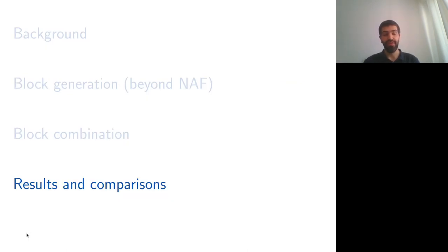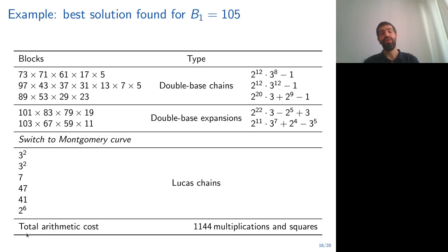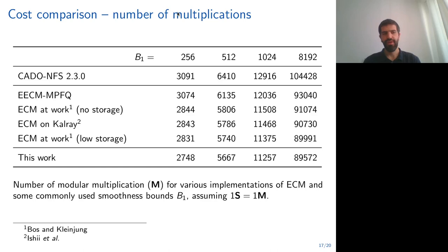Now, let's look at results that we obtained with this algorithm. First, let's look at the best solution that we found for B1 equals 105, which is the smallest B1 value used by CADO-NFS during the cofactorization step. Here we can see that with this solution, we use both the twisted Edwards curves and the Montgomery curves. We use double base chains and double base expansions with triplings on the twisted Edwards curves, and we use Lucas chains on the Montgomery curves.